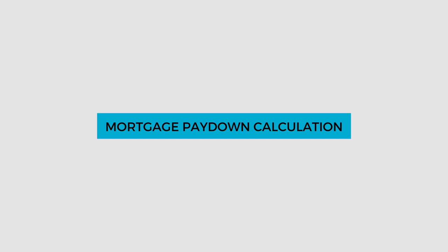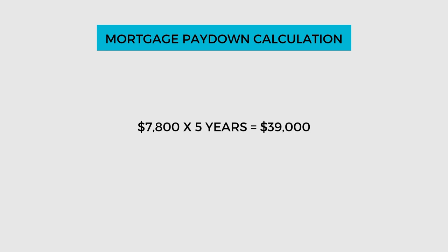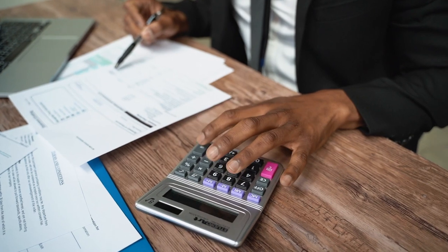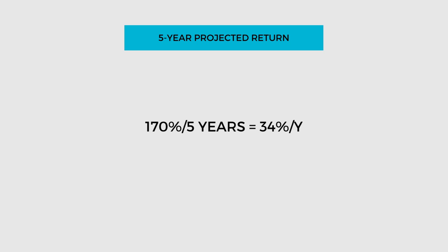The third hack is a quick mortgage paydown calculation. If we take the value of the mortgage and multiply that by 3%, this is the approximate amount of principal we will pay down each year. So we take the $260,000, multiply that by 0.03, and that gives us $7,800 a year. Multiply that by five years, which gives us $39,000. With these three hacks and using a conservative 3% appreciation, we can very quickly calculate what our potential return on investment would be. We have $500 a month in cashflow — the same as before — $39,000 in mortgage paydown versus $38,000, and our market appreciation stays the same at approximately $50,000. Our five-year projected return would be 170% divided by five years, giving us an annual rate of return of 34%, compared to our original number of 33.6%.